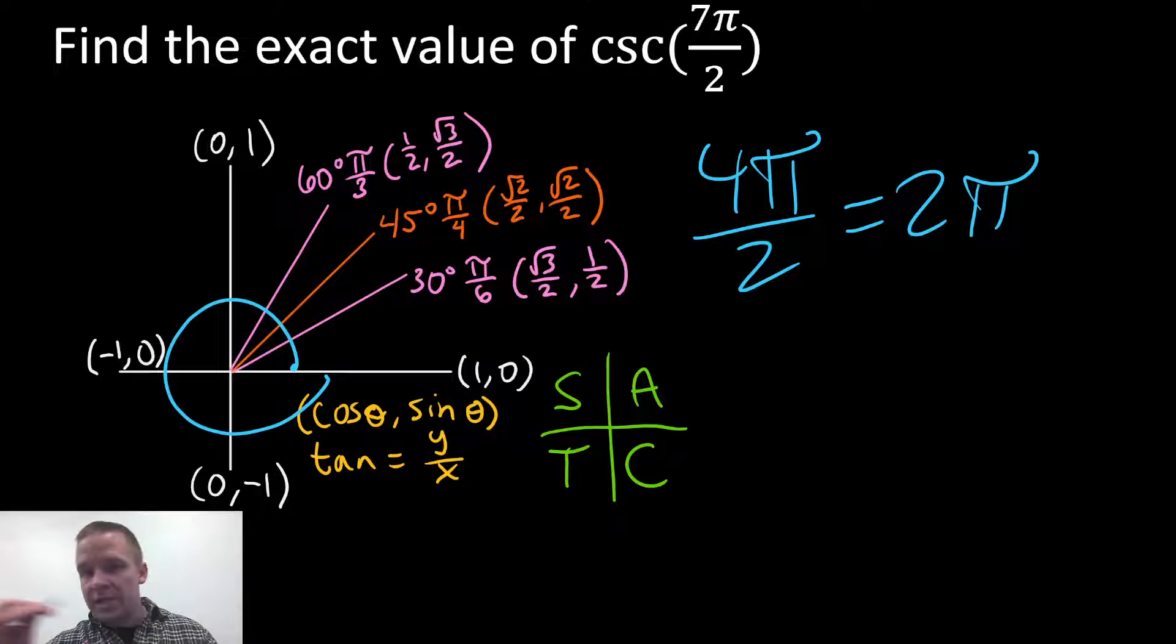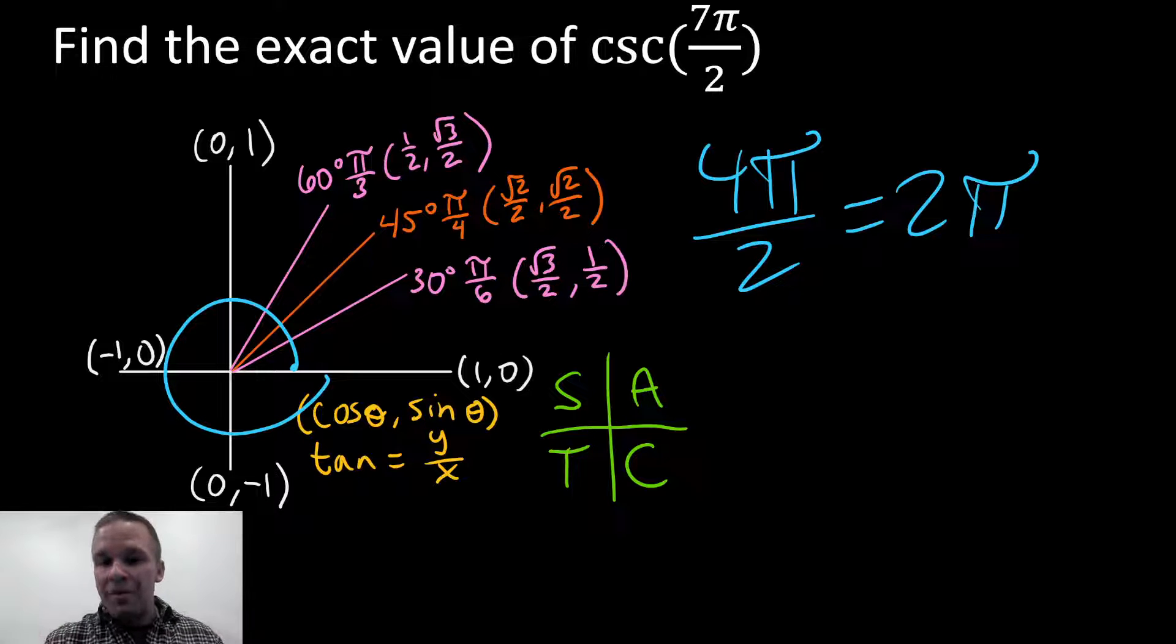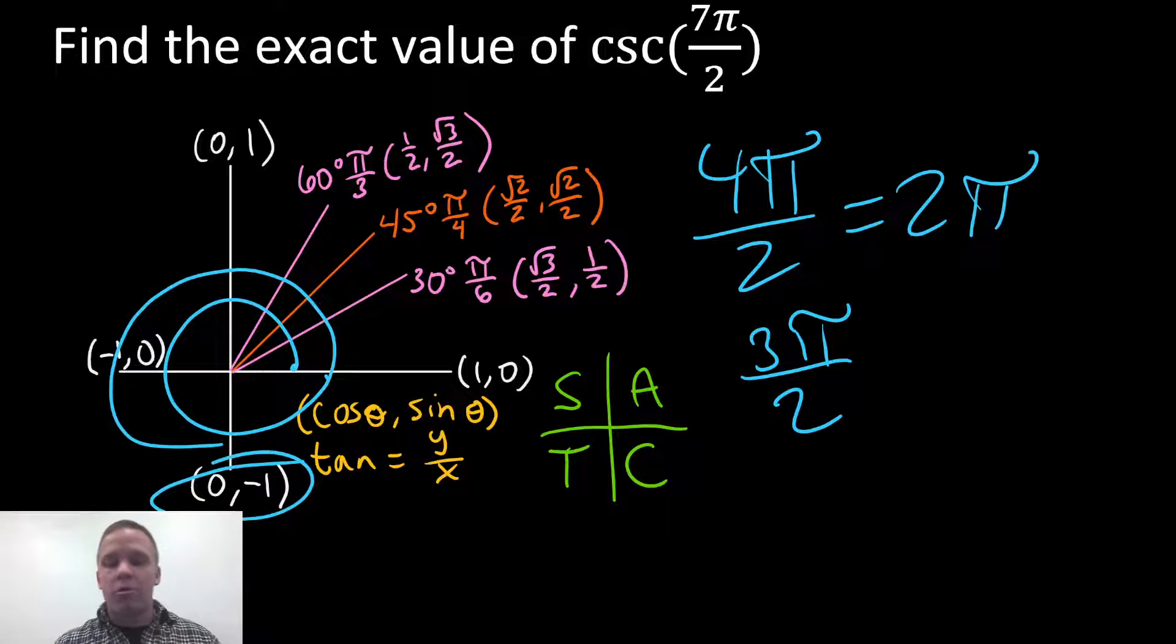So that's one rotation. I'm left with now three pi over two to deal with, which would put me all the way around to that ordered pair right there. Okay, so we've got that sorted out.